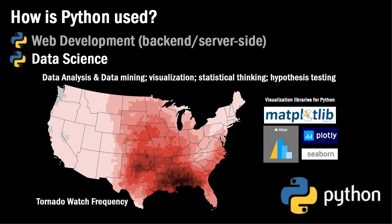Another popular use of Python is in data science, and this has really driven the popularity of Python and the demand for people with these skills. We live in an era right now where everything is very data-driven, and so Python is used a lot for data analysis and data mining. We can do things like take data and create charts and visualization of data — here's an example looking at the watch frequency of tornadoes over a number of years, even possibly decades.